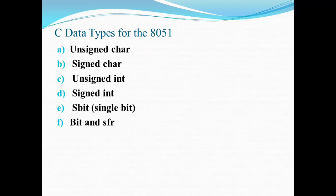These are some popularly used data types for embedded C in 8051 microcontroller: unsigned char, signed char, unsigned int, signed int, sbit, bit, and sfr. Let us discuss all these data types in detail.